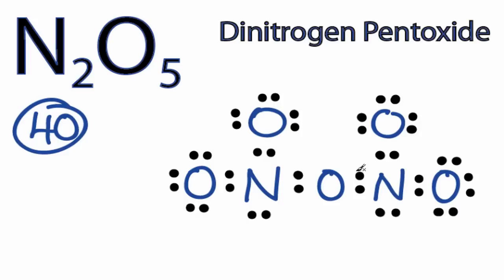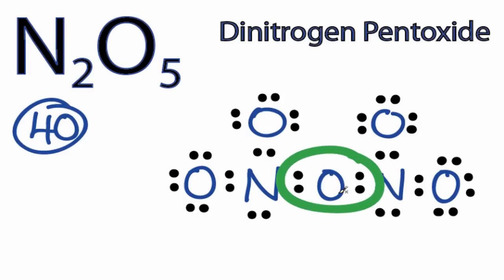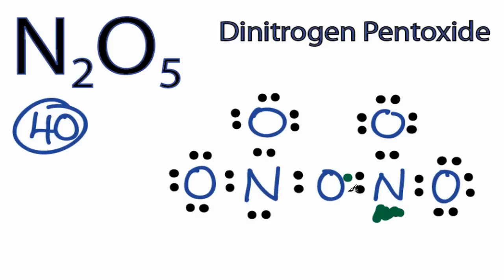You can see the octets are fulfilled for all the atoms except the central oxygen, which only has 4 valence electrons. We could take these two valence electrons and share them, do the same over here, and that would give us an octet on this central oxygen, and we'd still only be using 40 valence electrons.